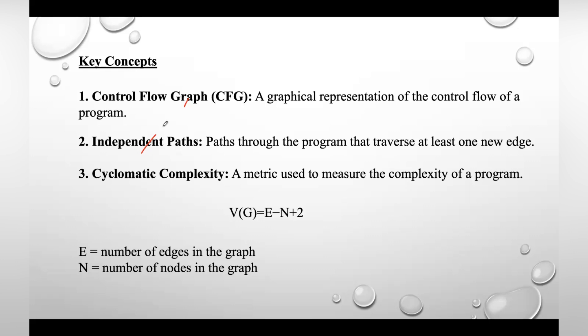Then we have independent paths. An independent path is one that traverses at least one new edge of the control flow graph. Basis path testing focuses on identifying these independent paths to ensure that all logic in the code is exercised.